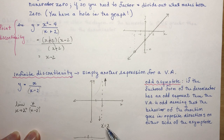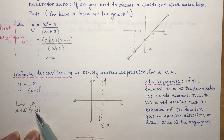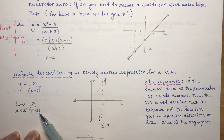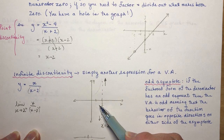You can verify this: if I had (x−2) squared, squaring makes both sides positive. But putting in x = 1 gives 1 minus 2, which is negative, and 1 divided by a negative is negative — so the function is down on the left side.